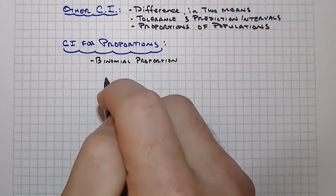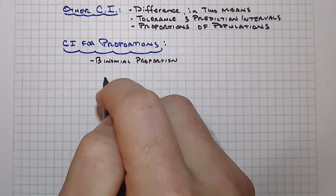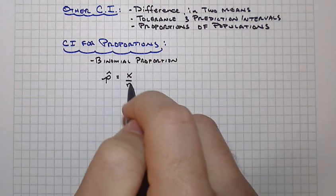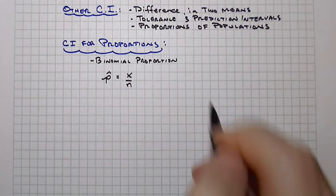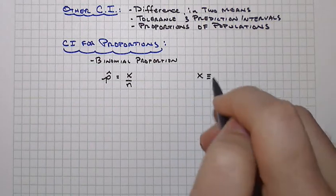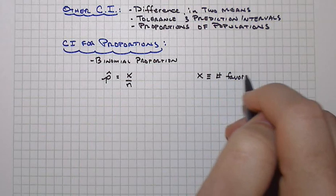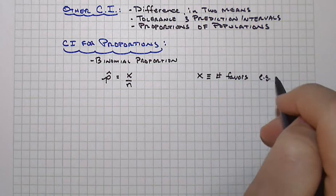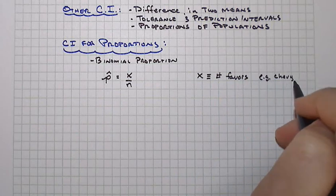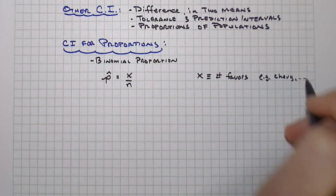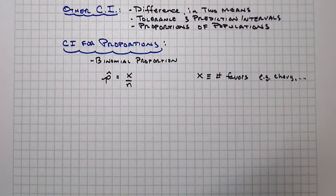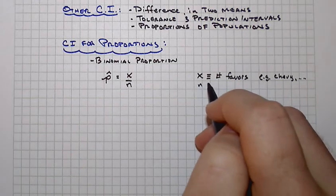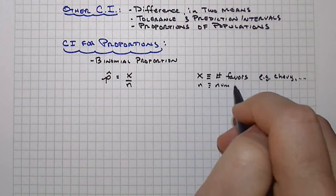So we'll be looking at, say, a population percentage that we'll estimate with a fraction out of a survey, for instance. So X might be the number that favors... It could be anything here. It could be a particular brand, so that could be favors, say, Chevy or Toyota or whatever. Or it could be, as is so often the case, a survey associated with politicians, a particular candidate. And N would just be then, of course, the number in the random sample.